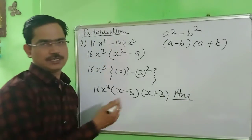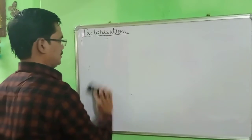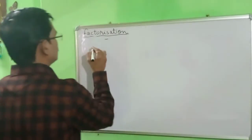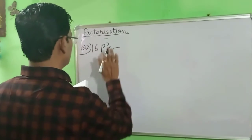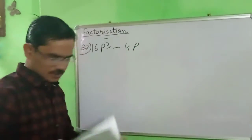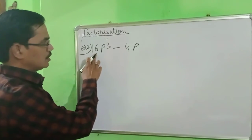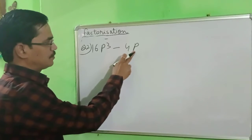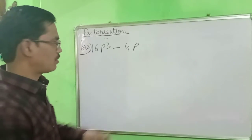Let me take one more question. You can see here — what is the common? We will find what is common here. 4 is here and if you divide 16 by 4, you get 4. So we can take 4 as common. And p is also present in both terms, so we can take 4p as a common factor.